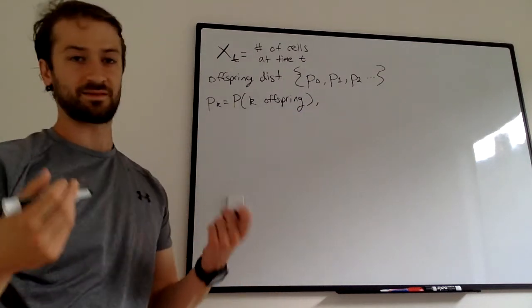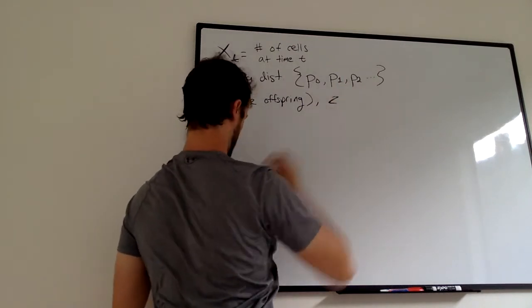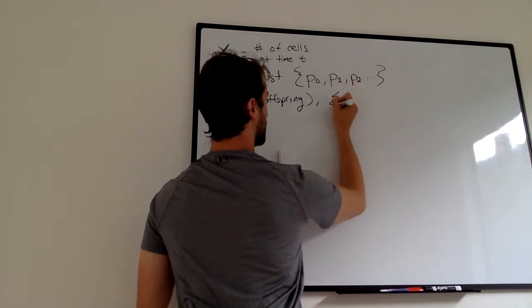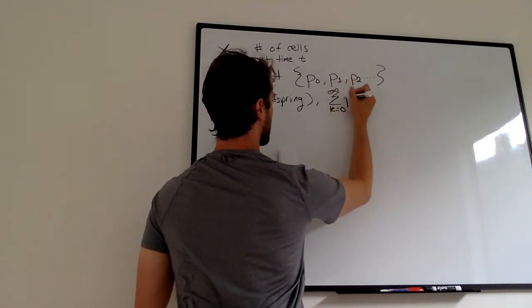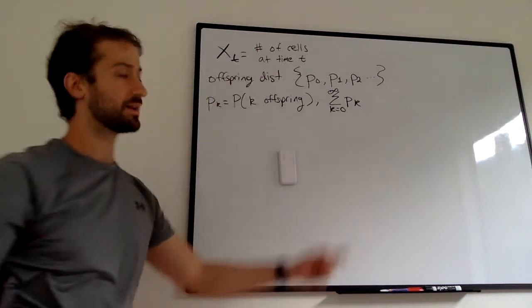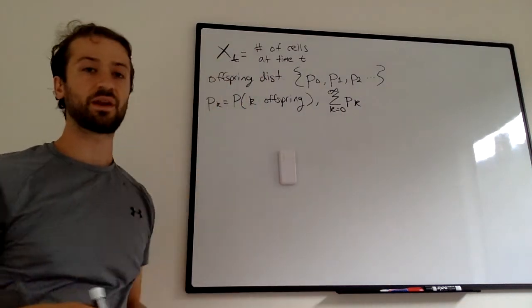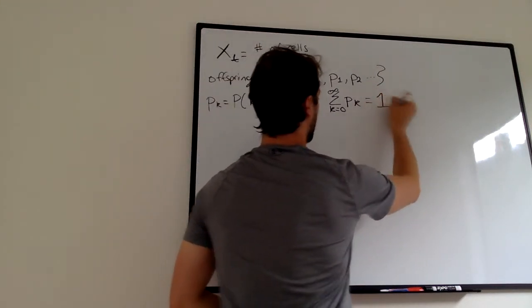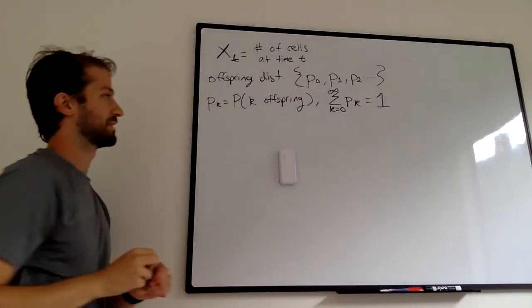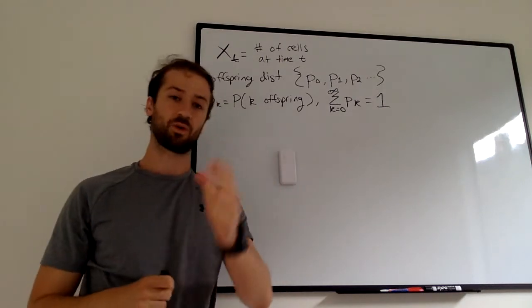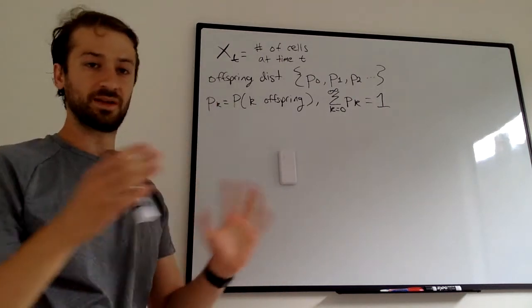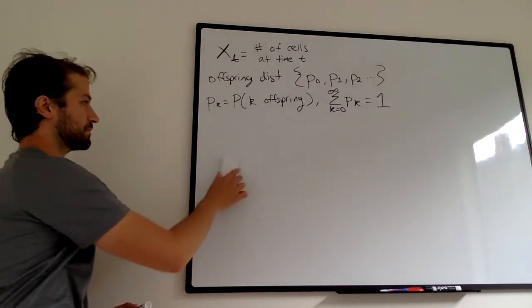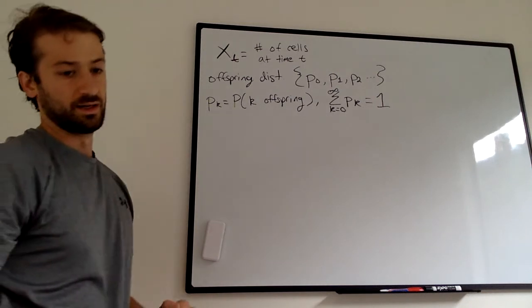And because, by the laws of probability, all of these probabilities, if we start at 0 and add all the way to infinity, they must sum to 1. Because this cell that we have at time t, it can either go to 0 or 1 or 2, but all the probabilities must sum to 1, which makes sense.